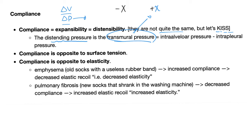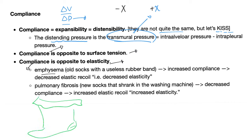Compliance is opposite to surface tension, and opposite to elasticity. Surface tension wants your lungs to collapse; compliance wants your lungs to expand. Elasticity wants your lung to collapse; compliance wants your lung to expand. Emphysema is like your very old socks with a lax rubber band — very easy to expand, but if you leave it alone it's not going to recoil. You have increased compliance but decreased elastic recoil.